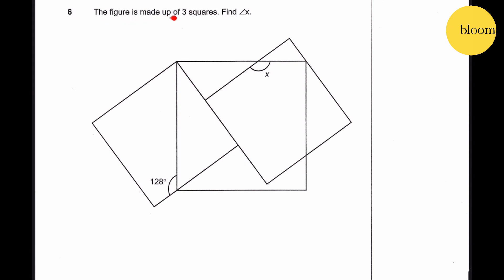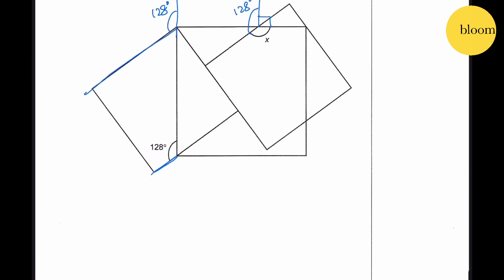Question 6: The figure is made up of 3 squares. Find angle X. Since we have squares, all sides are equal and parallel. This gives us 128°, and same here, 128°, and this is 90°. Angle X is given by angles at a point summing to 360°: 360° − 128° − 90° = 142°. That's the answer.